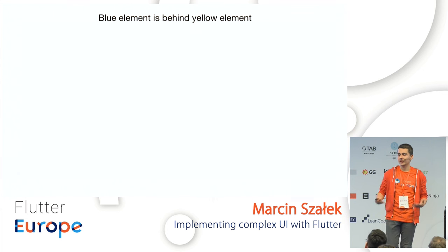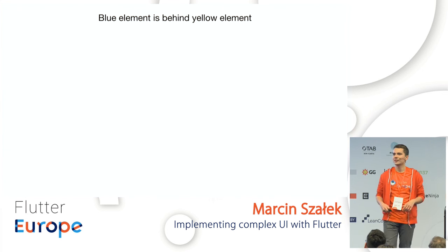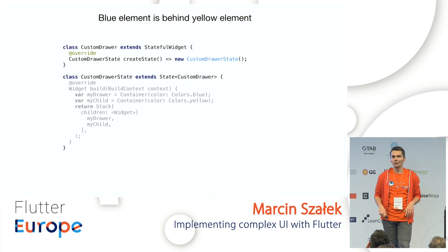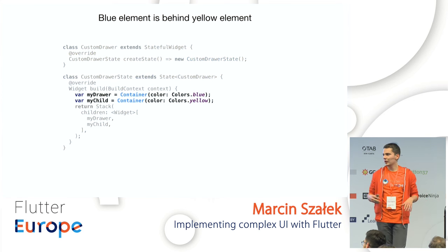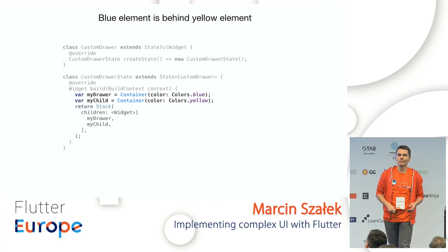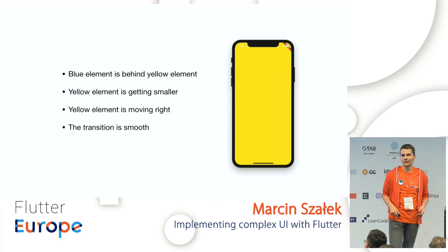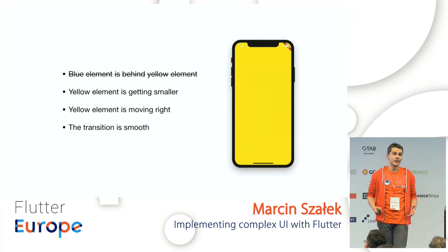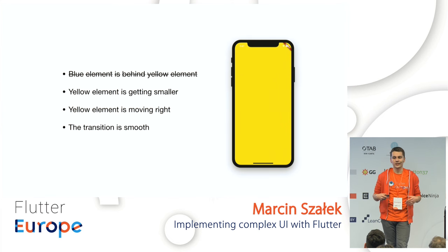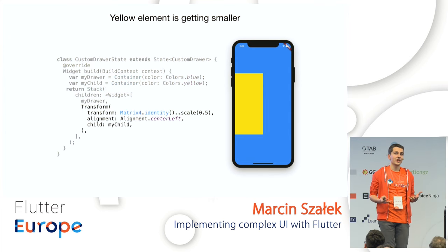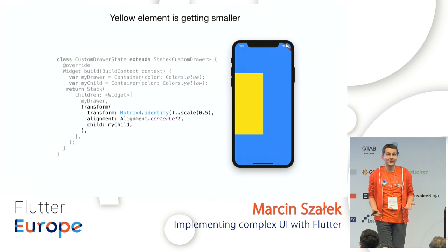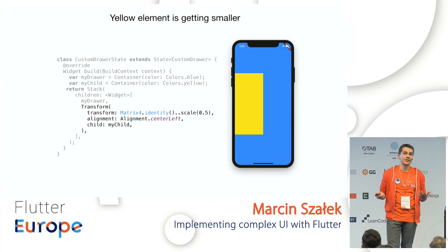Let's implement those steps one by one. To have the blue element behind the yellow element, we create a widget called custom_drawer with two widgets — my_drawer and my_child — and put them in a Stack. That handles the first part. To make the yellow element get smaller, we wrap my_child with a Transform providing a scale. Then to move it to the right, we add a translate.